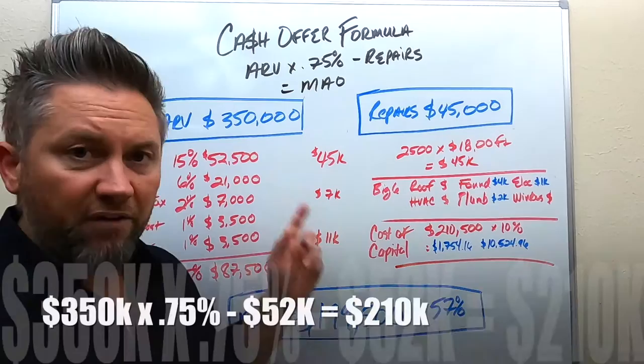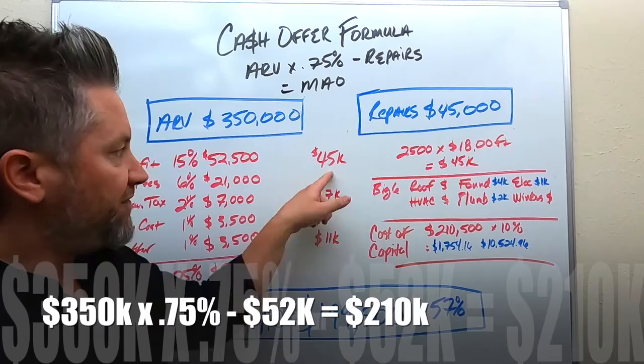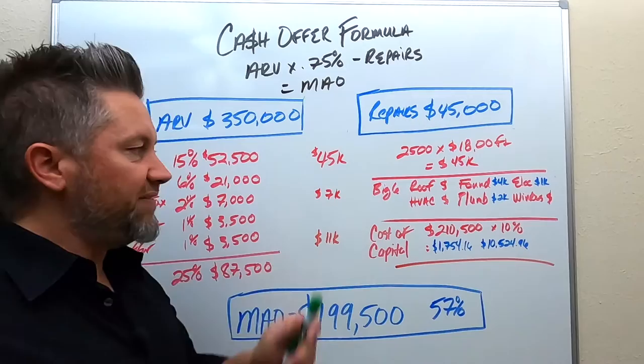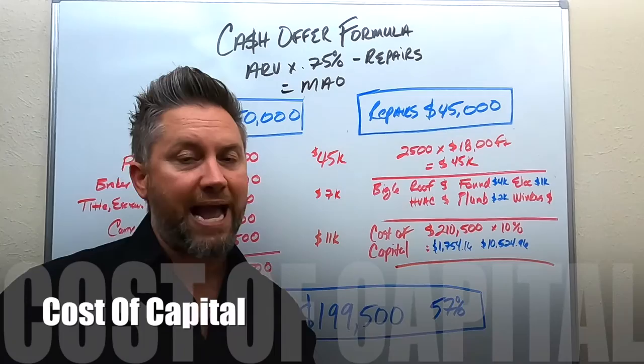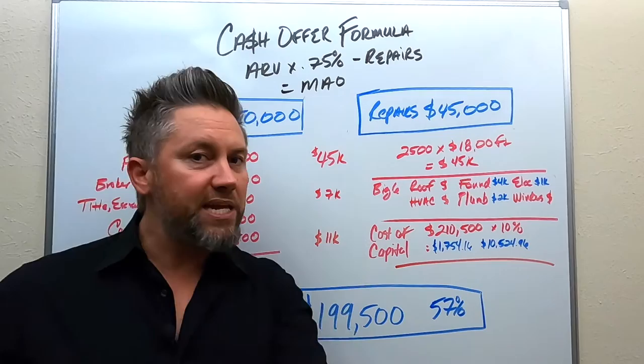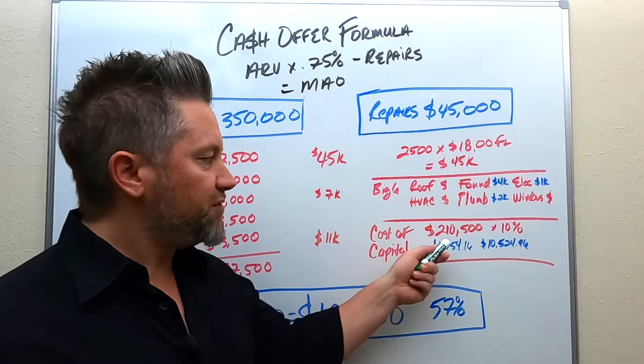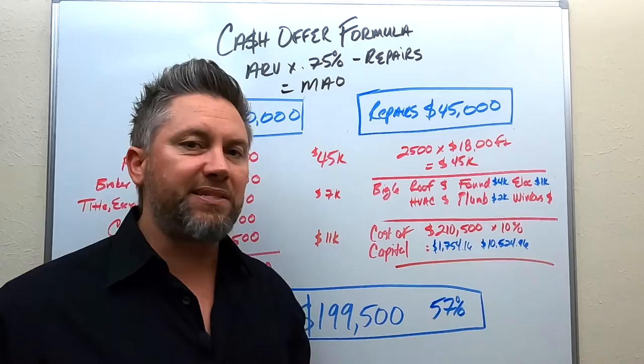So that gives you an additional $7,000 in big ticket items. If you take the ARV of $350,000 times 75% minus repair costs — $45,000 in cosmetics including landscaping, and $7,000 in big ticket items — that lands you at an offer price of $210,000. But let's take this a step further: if you have a cost of capital, that can eat you alive too. Almost everybody has cost of capital until they've been doing this a long time and operate strictly with cash.